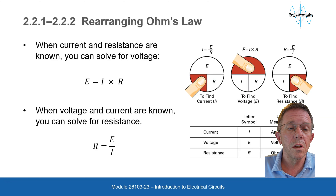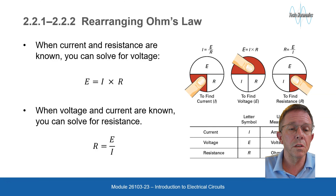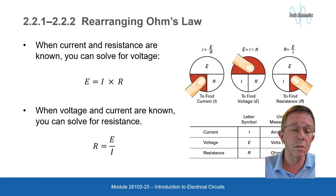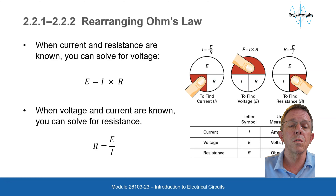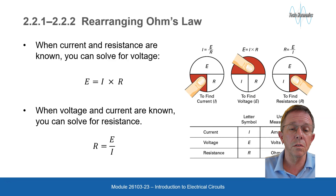Ohm's law can also be rearranged. When current and resistance are known, you can solve for voltage: E equals I times R. When voltage and current are known, you can solve for resistance: R equals E divided by I.